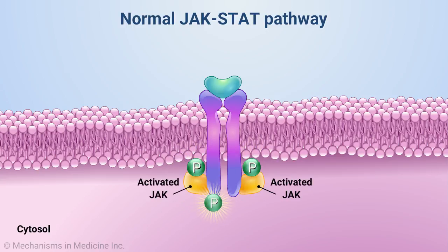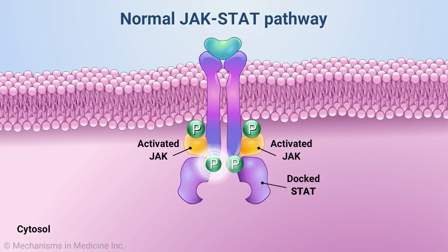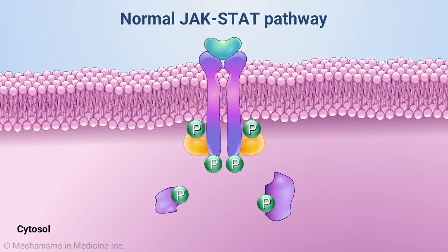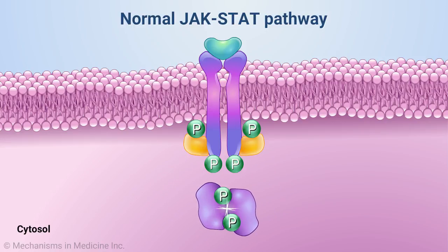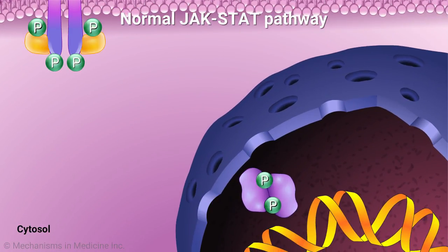Activated JAKs then phosphorylate specific residues on the intracellular domains of the cytokine receptor, which serve as docking sites for associated STAT proteins. Upon docking, the activated receptor-associated JAKs phosphorylate STATs. The phosphorylated STATs then dissociate from the receptor chains, dimerize with each other, and translocate to the cell nucleus where they activate gene transcription.